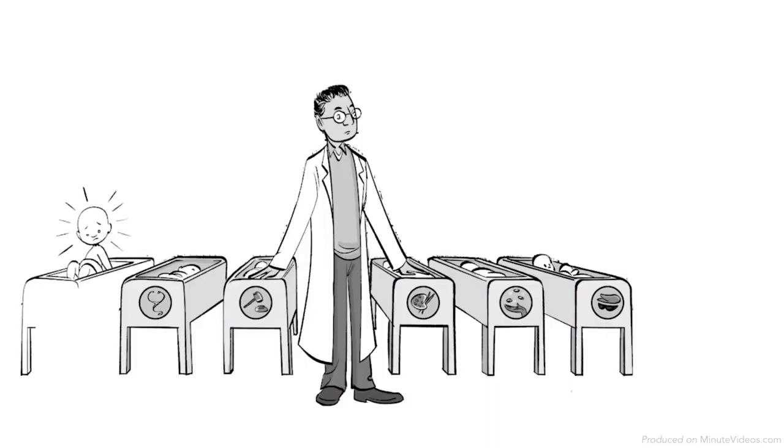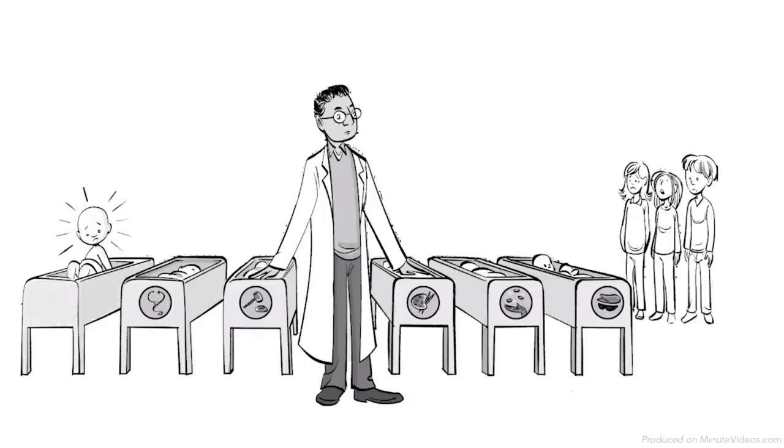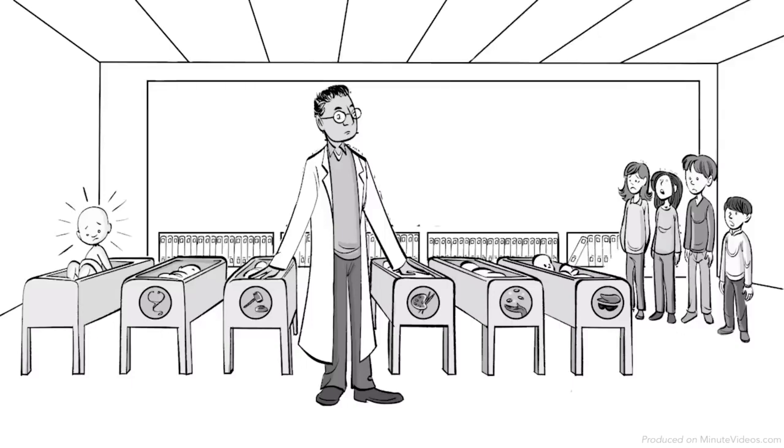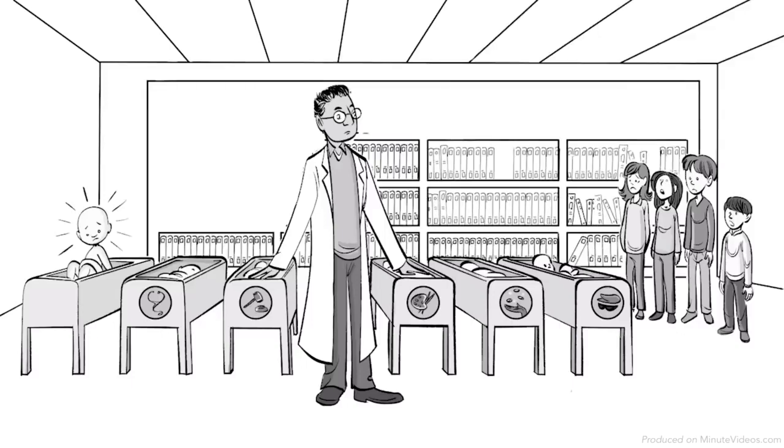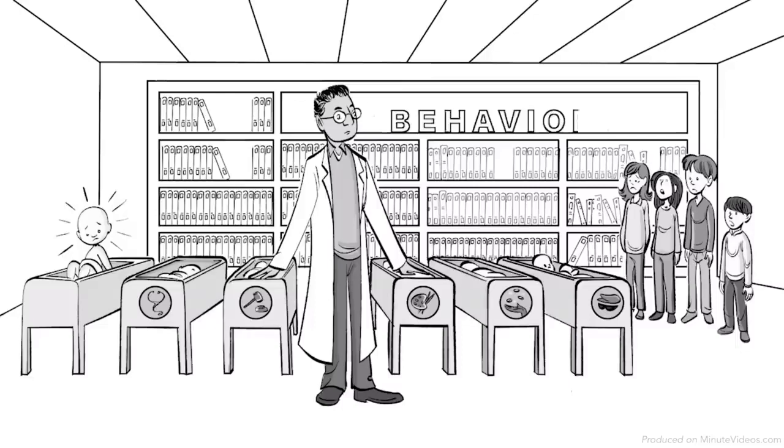First, he completed experiments with 8-month-old Albert, and later he applied his theory when raising his own children. In essence, he applied the scientific method to human psychology which he called behaviorism.